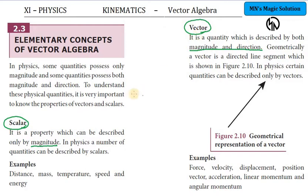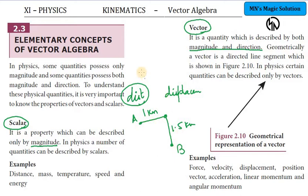This is already a 9th standard concept. Do you remember distance and displacement? For distance, see this is point A, and the person is going to point B. Imagine this is 1 kilometer and this is 1.5 kilometer. So what is the distance? 1 plus 1.5, totally 2.5 kilometers will be the distance. Is this directional? No, it is not directional.